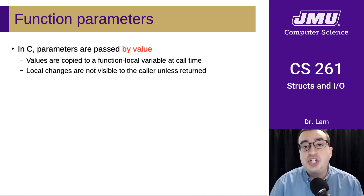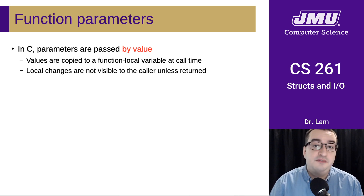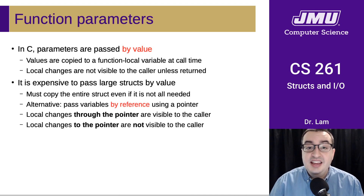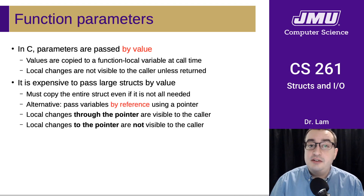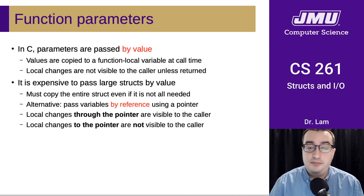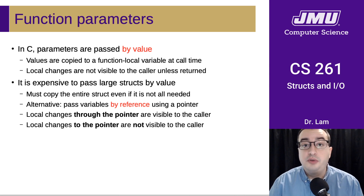Any changes to a local variable inside of the function are not visible outside it. Once you start passing around structs, this can get quite expensive because the structs could be quite large, and that's a lot of data you might have to copy around, especially if the function is called many times.